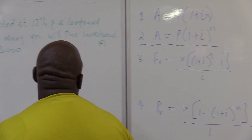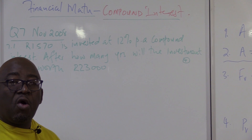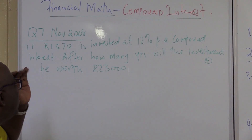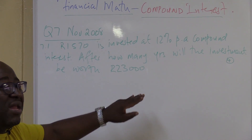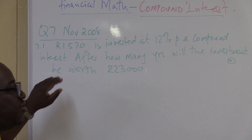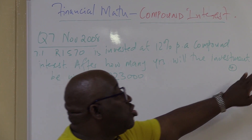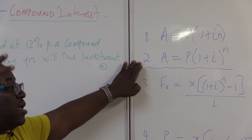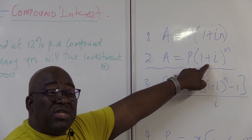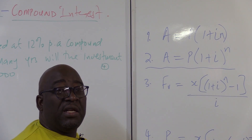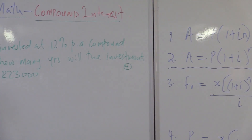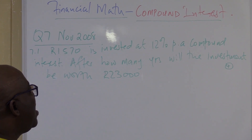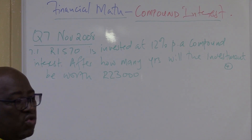Let's look at how this was set. Remember one thing and one thing only: collecting your data is important — that's where your English comes in. R1,500 is invested at 12% per annum compound interest. Since it's compound interest, I'm going to use this formula. Remember, if what I'm putting in increases, it will be plus; if it decreases or depreciates, it will be minus. After how many years will the investment be worth R23,000?